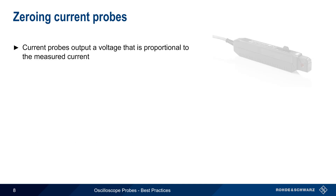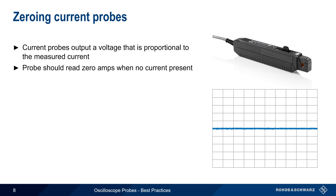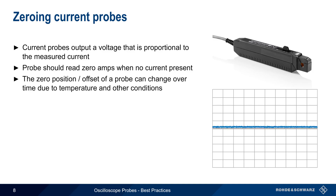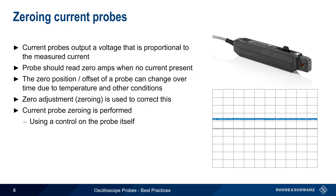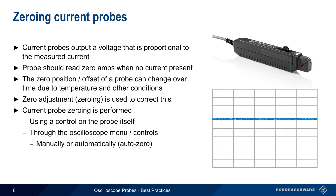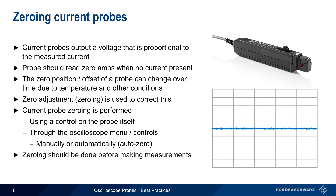Our next two tips involve current probes, which produce an output voltage that's proportional to the amount of measured current. Ideally, a current probe should show a zero ampere reading when no current is present. But due to temperature and other environmental conditions, the zero value of a current probe may change over time. This can and should be corrected using zero adjustment or zeroing. For probes with a non-proprietary interface, a zero offset knob or wheel is usually built into the probe itself. Probes with a proprietary interface usually allow zeroing to be performed using the scope menu or controls, and some scopes even have an auto zero function that applies the correct offset automatically. For best accuracy, it's always a good idea to zero current probes before making any current measurements.